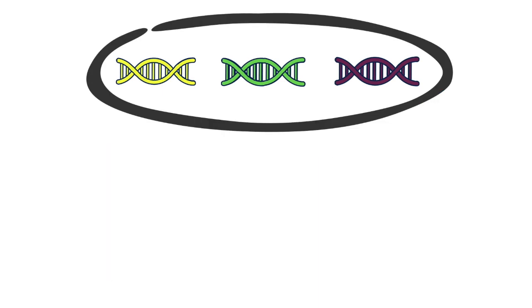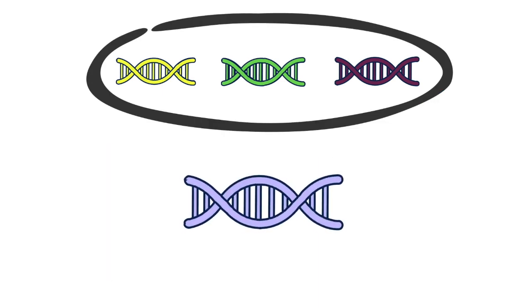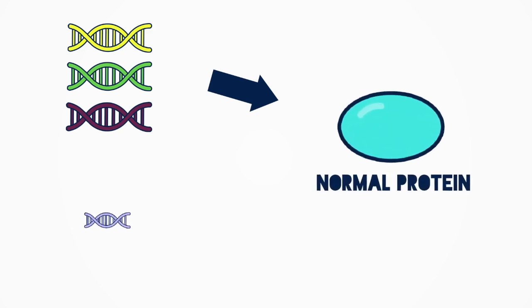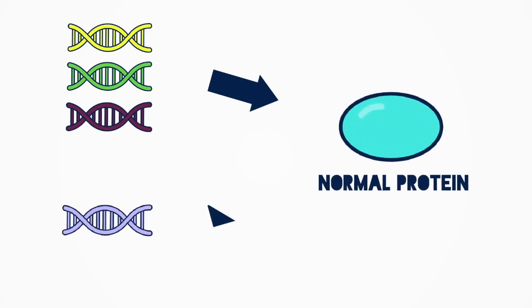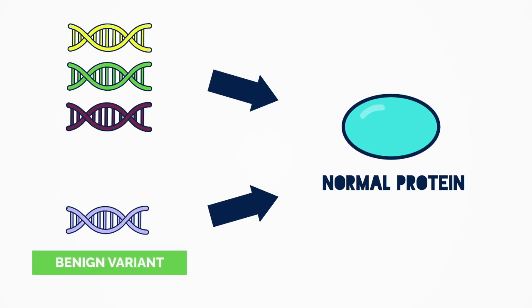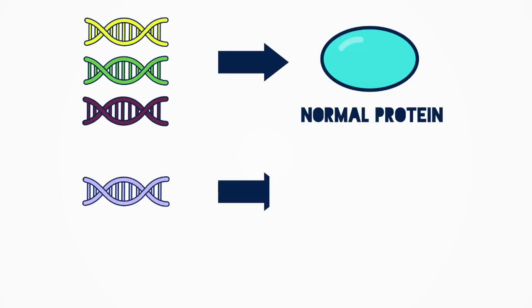Anytime we find something different than what is expected, known, or common, it's called a genetic variant. If this new version of the gene doesn't change the end product — meaning it does the same job as the normal versions — then it doesn't impact our health. We call it a benign variant, which is just a less common normal version of the same gene.